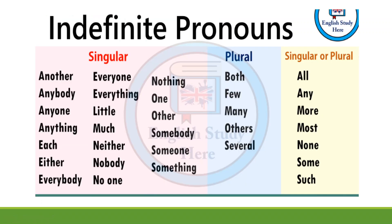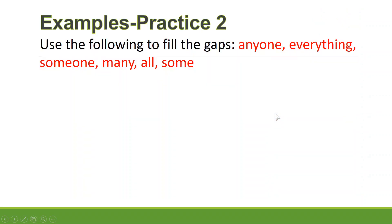Indefinite pronouns are grouped into singular, plural, or singular/plural. Singular examples: another, each, everybody, little, much, nobody, no one, other, somebody, something. Plural: both, few, many, others, several. Singular or plural: all, any, more, most, none, some, such. There are many indefinite pronouns available, but these are the ones we commonly use when talking.